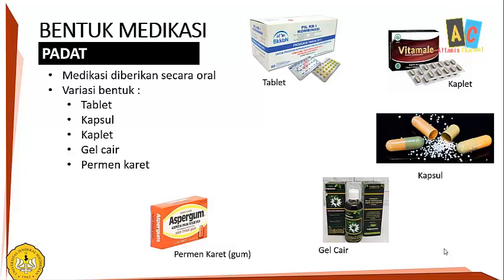Kemudian bentuk medikasi yang kedua adalah bentuk padat. Ini banyak variasinya dan biasanya memang diberikan secara oral, karena kalau lewat intravena bisa terjadi emboli. Variasi bentuknya ada tablet, kapsul, kaplet, gel cair, dan permen karet. Tablet bentuknya bulat gepeng dan padat. Kapsul sebenarnya serbuk tapi terbungkus dalam sebuah salut.